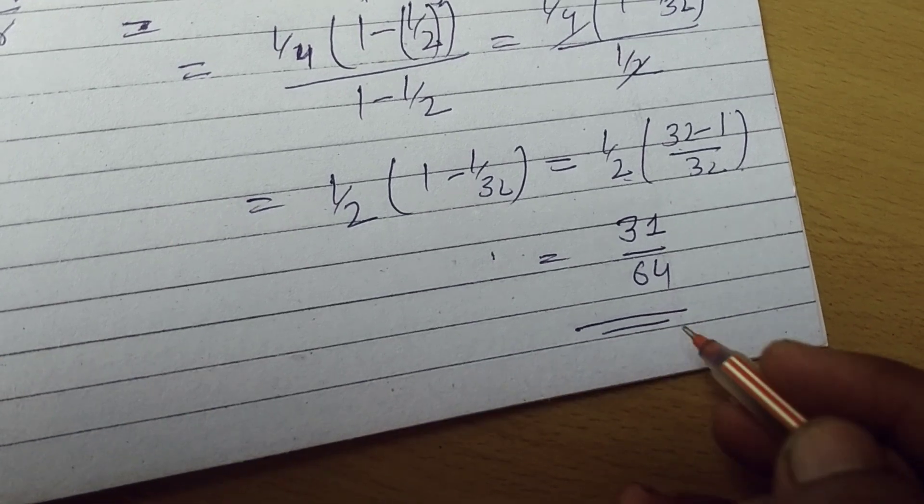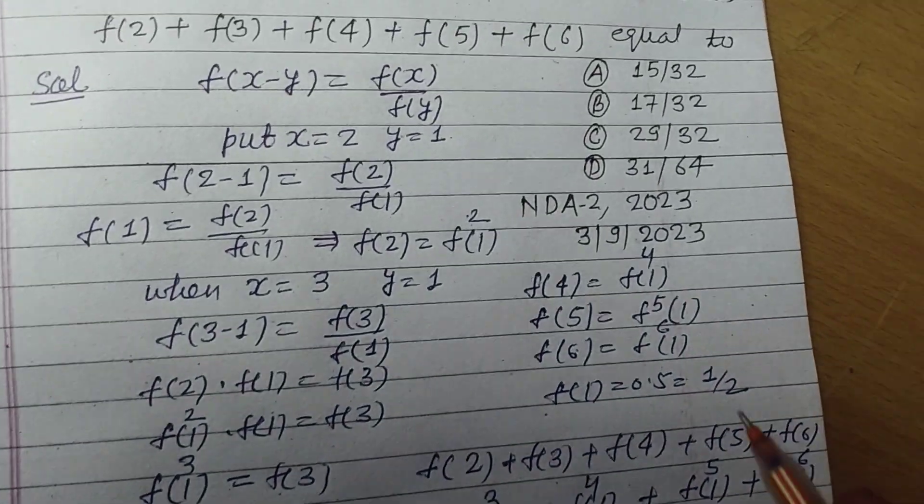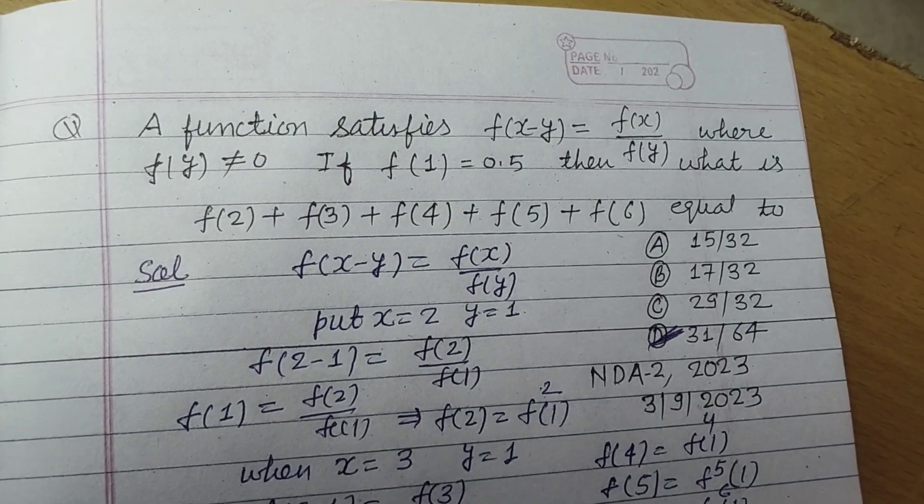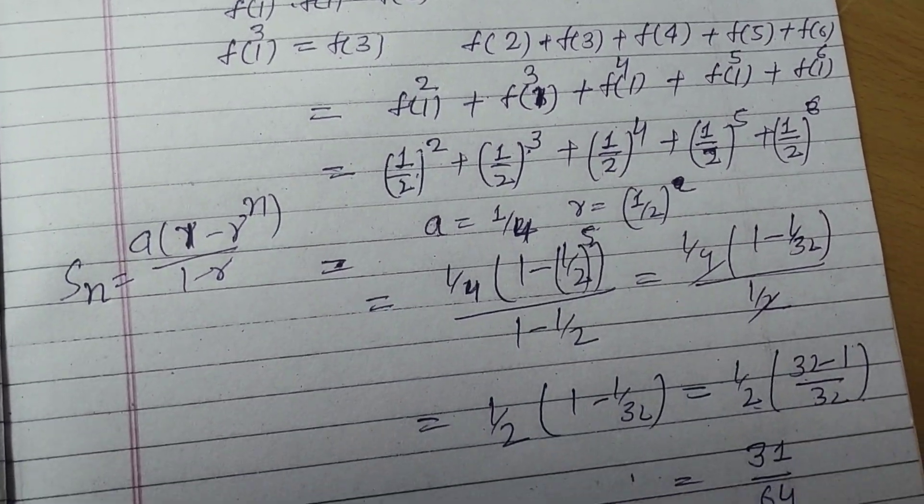31 upon 64 is the answer of this question which is found in option D. So student, I hope you got it, please like the video, subscribe the channel, thanks for watching.